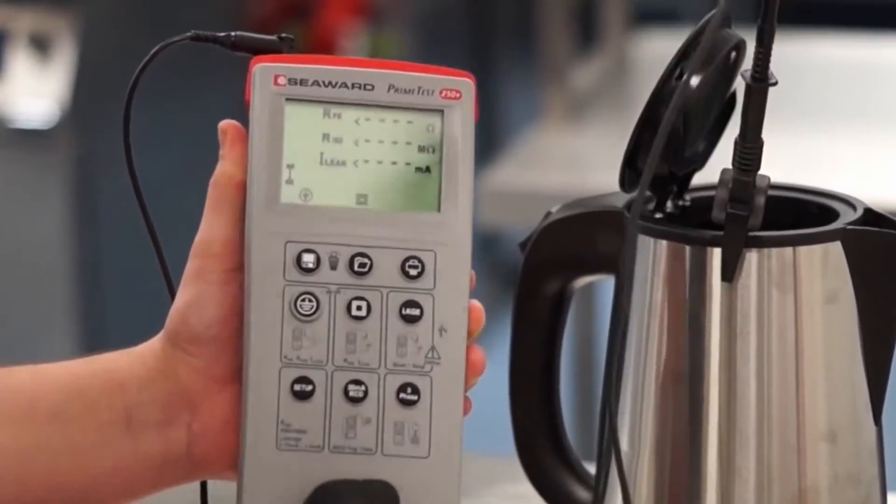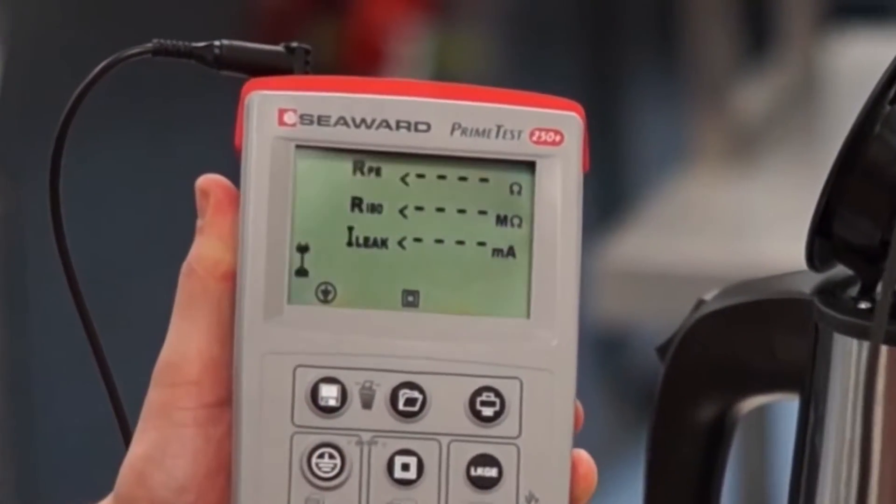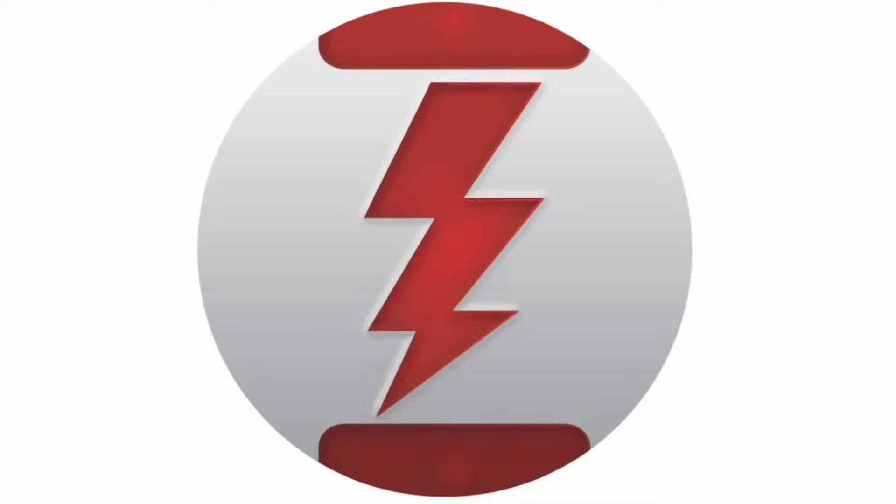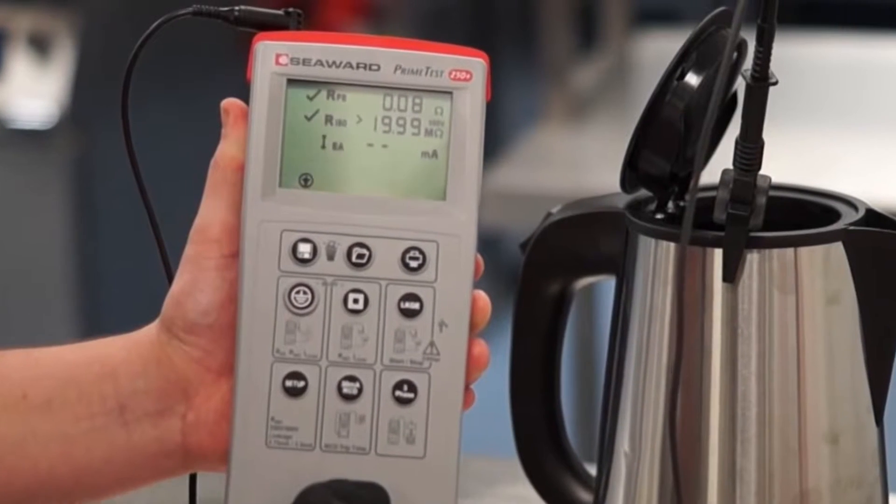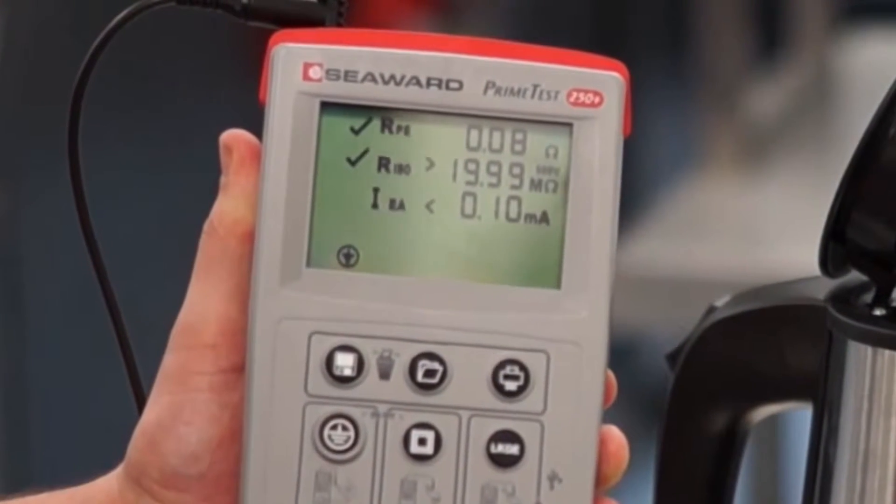Including RCDs and 3-phase equipment, is fast and straightforward with simple push-button operation. Seaward's unique ZAP circuit technology ensures reliable and accurate earth continuity readings every time.